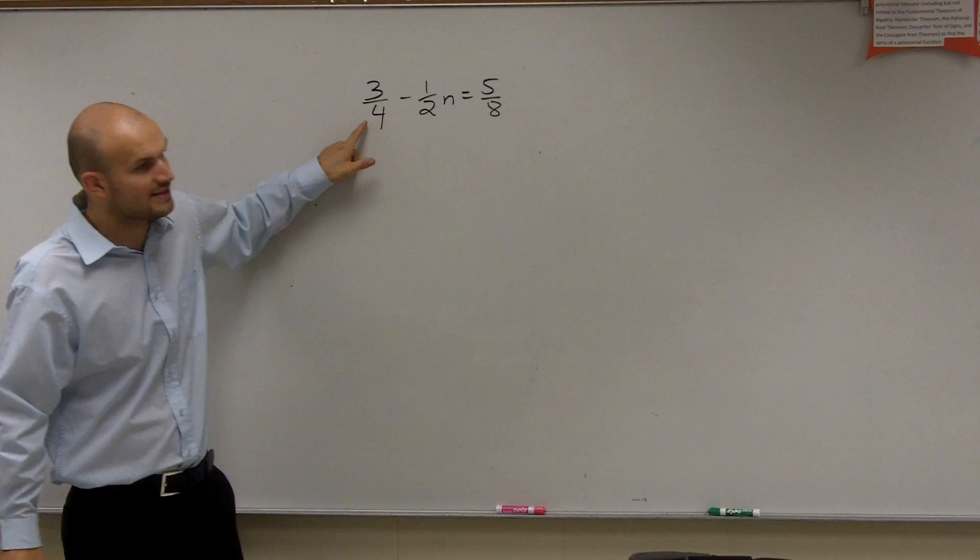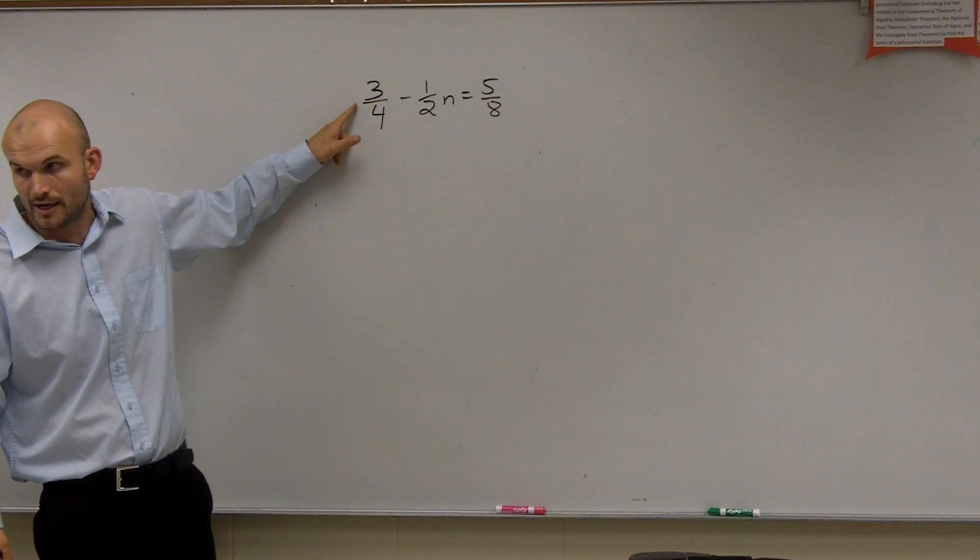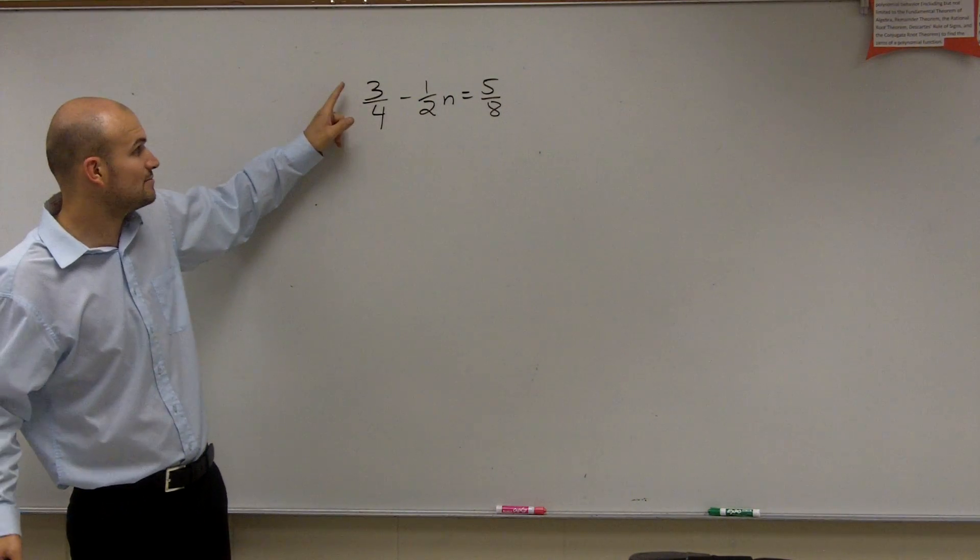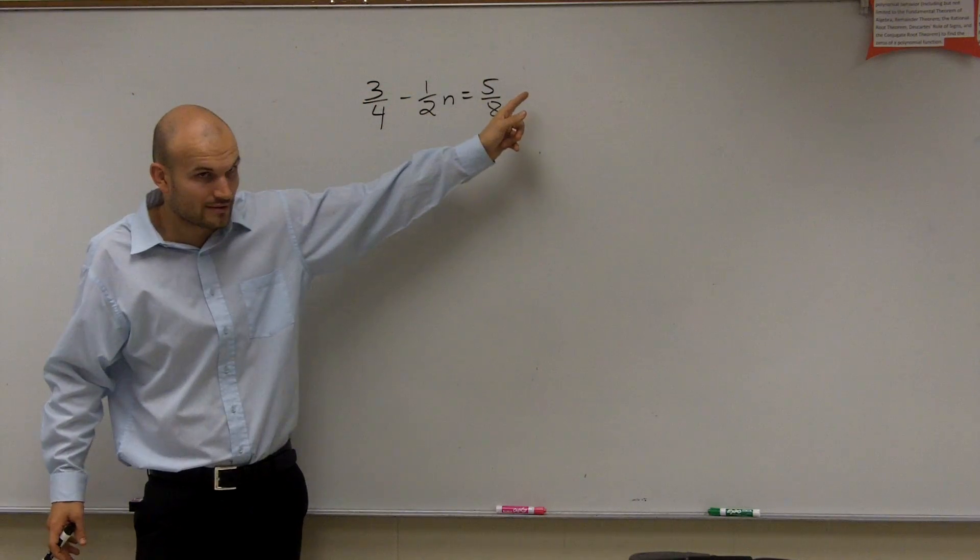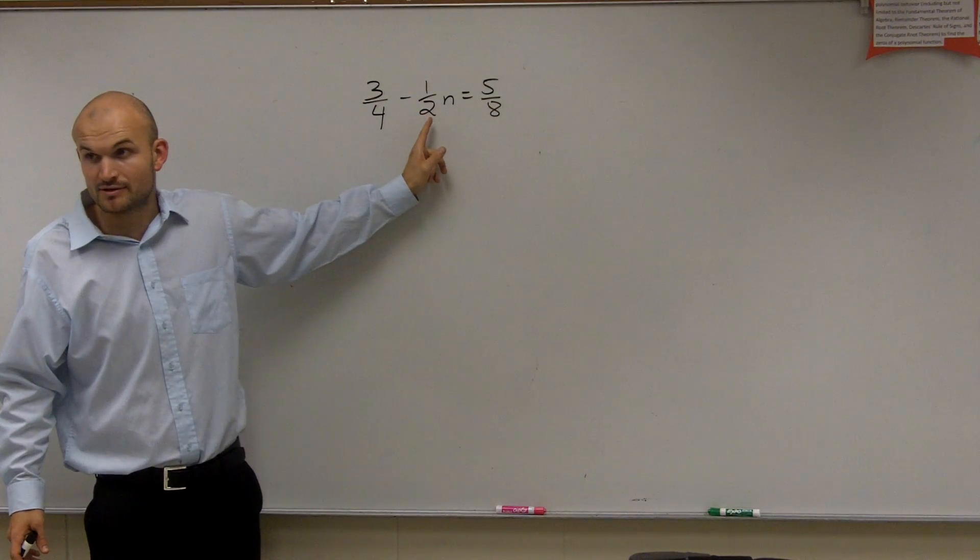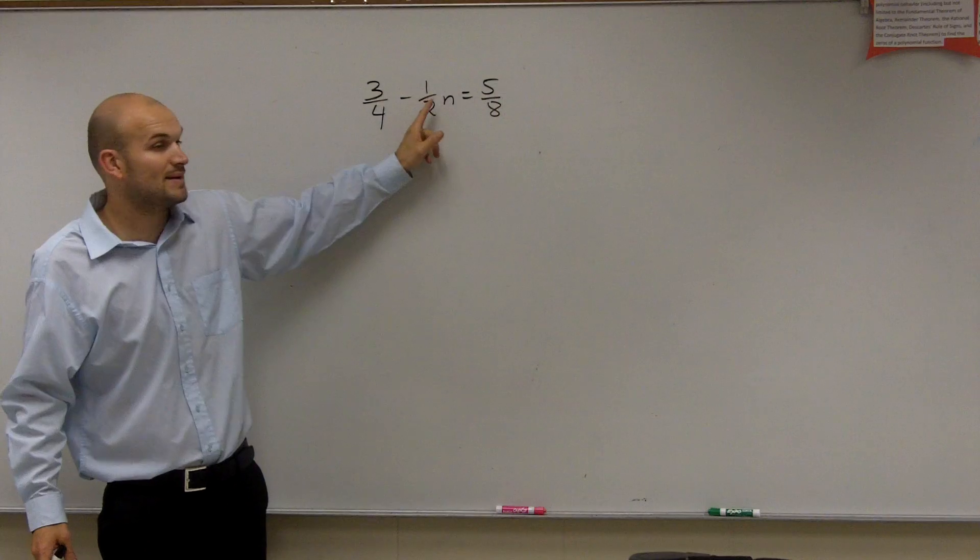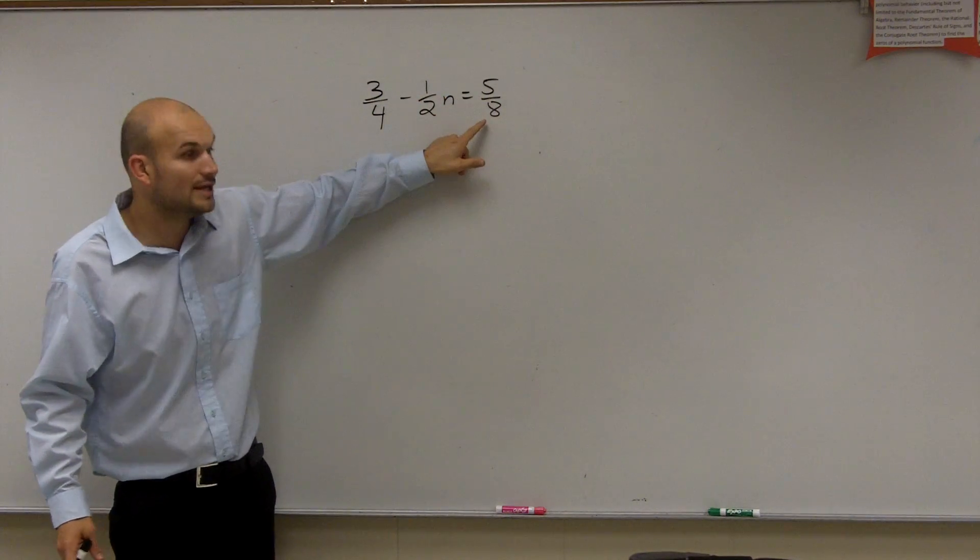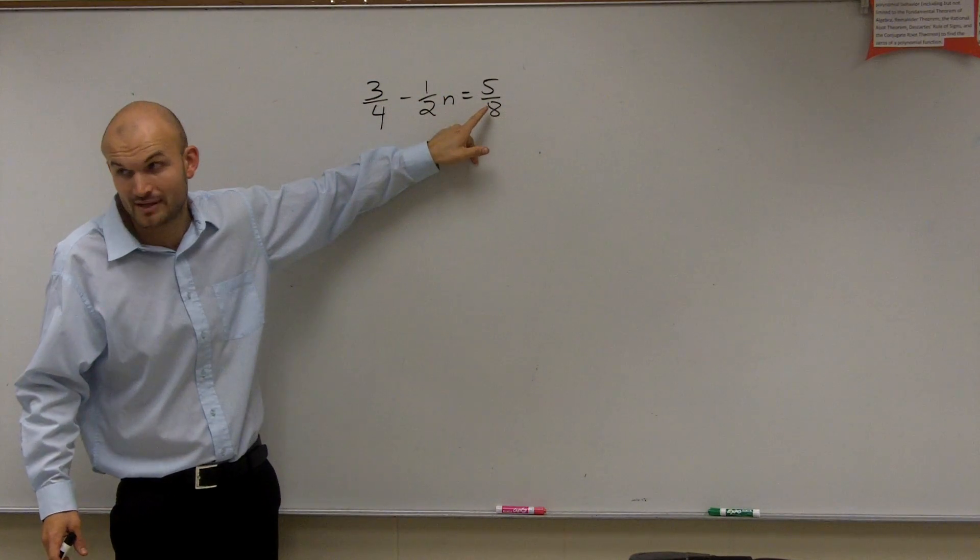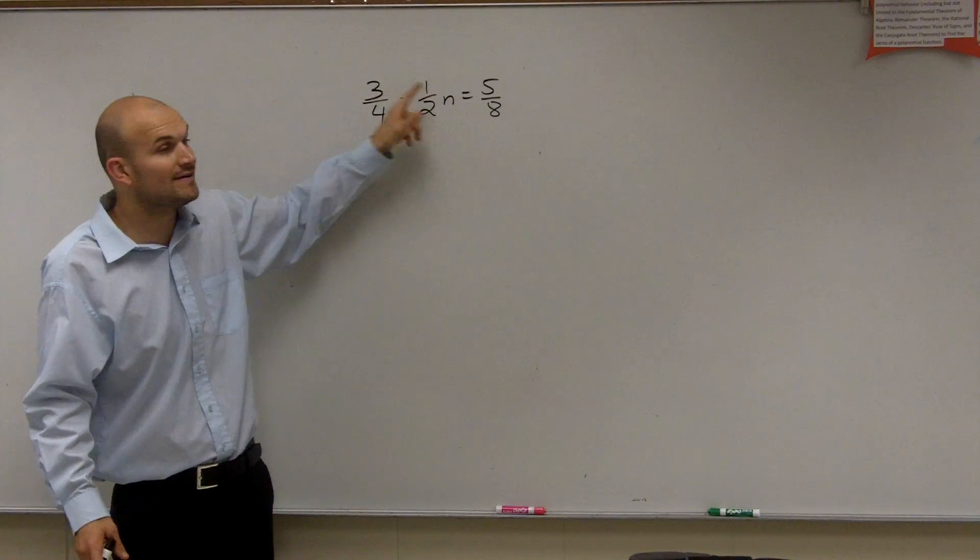So ladies and gentlemen, to get rid of this denominator, we have to multiply by 4, right? Or remember, as we talked about, you have to multiply everything by 4. Then to get rid of this one, you have to multiply by 2, but then you have to multiply everything by 2. And here, you have to multiply by 8. So to get rid of that one, you have to multiply by 8, but then you have to multiply everything by 8.